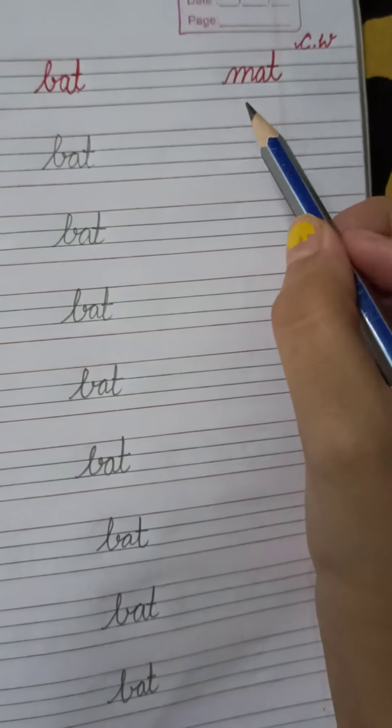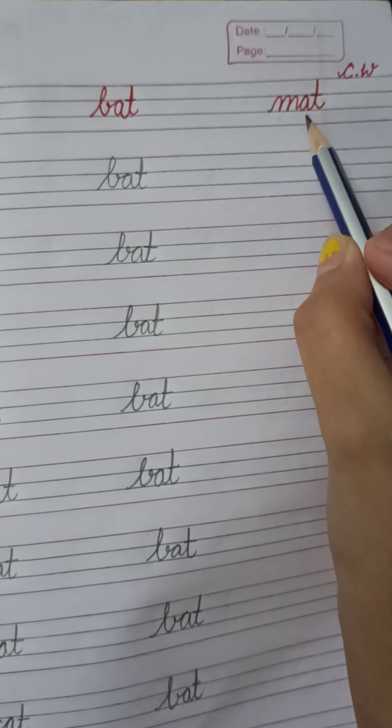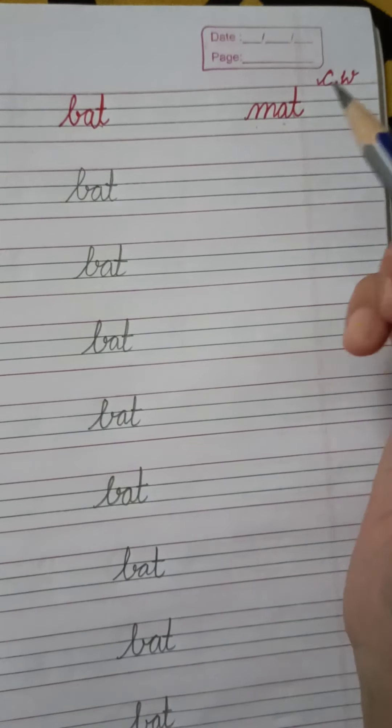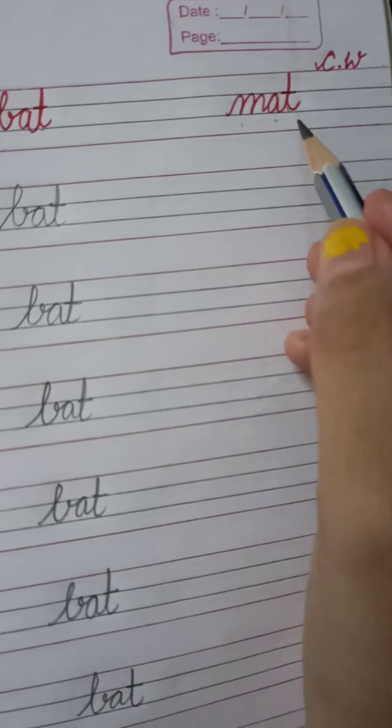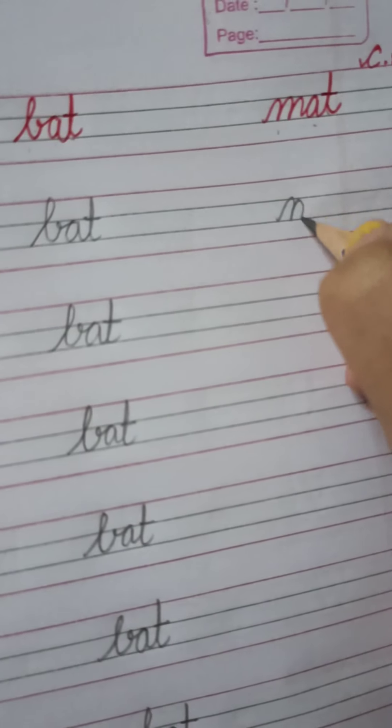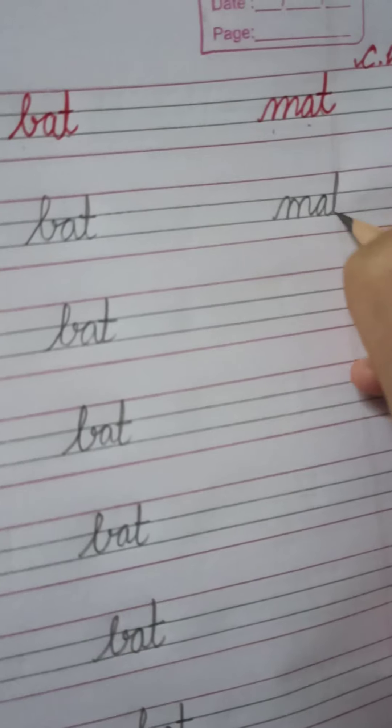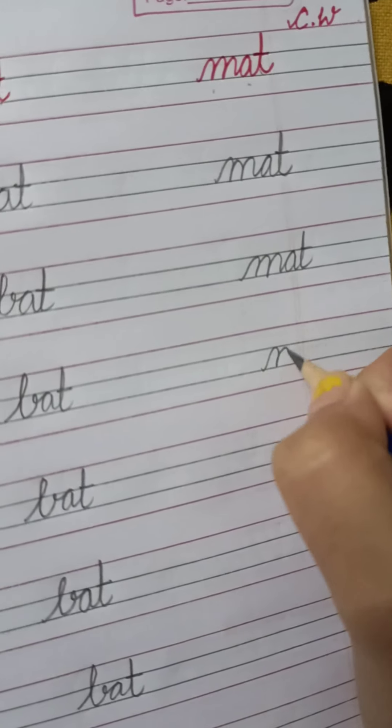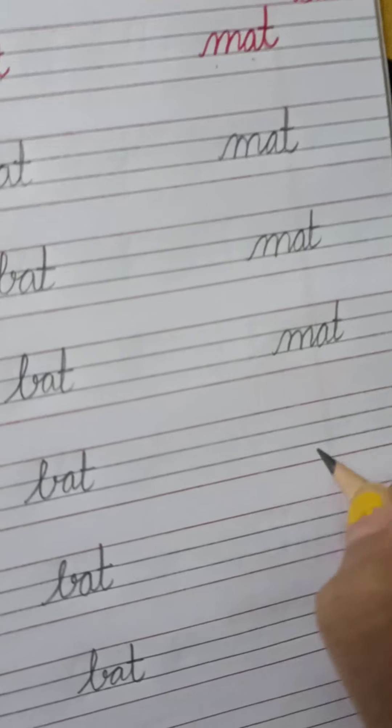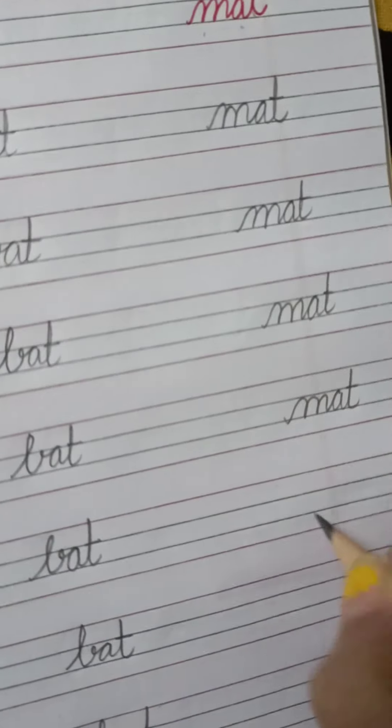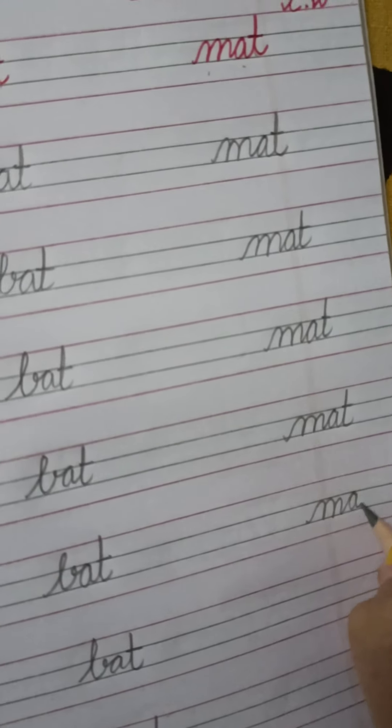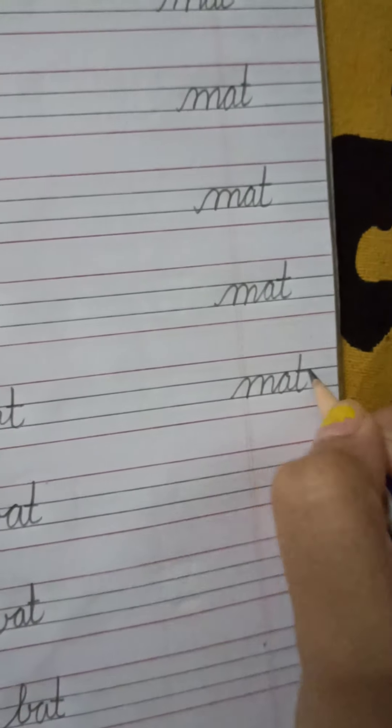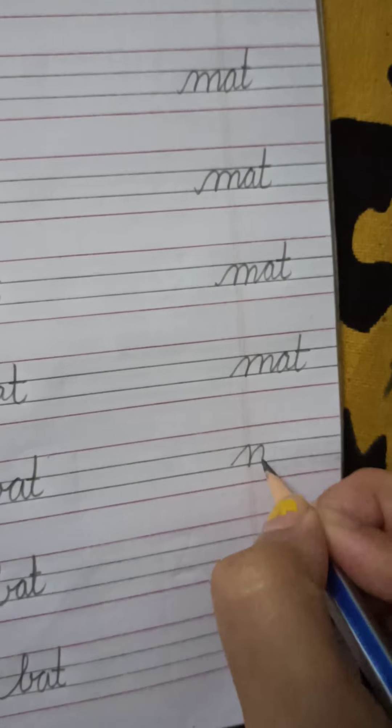Now next word is M-A-T-Mat. इसमें किसका sound आ रहा है? A का sound. M-A-T-Mat. M-A-T-Mat. M-A-T-Mat. M-A-T-Mat. M-A-T-Mat.